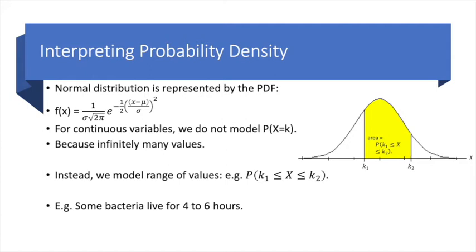Now consider another example. Suppose there is a certain kind of bacteria, and these bacteria live only between four to six hours. Now, if we want to try to find the probability of living for a particular time, for instance, what is the probability of living for exactly 5.0000000000 hours to be absolutely precise, then the probability of that happening is really zero.